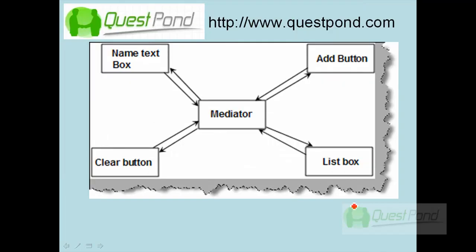The best way is to put a traffic police in between — the mediator. If there is a text change event in the name text box, it will send a message to the mediator saying there is a text change event, and the mediator will enable the add and clear buttons. If the add button is clicked, it sends a message to the mediator, and the mediator decides what to do with the text box, list box, and clear button. The mediator now holds the communication logic.